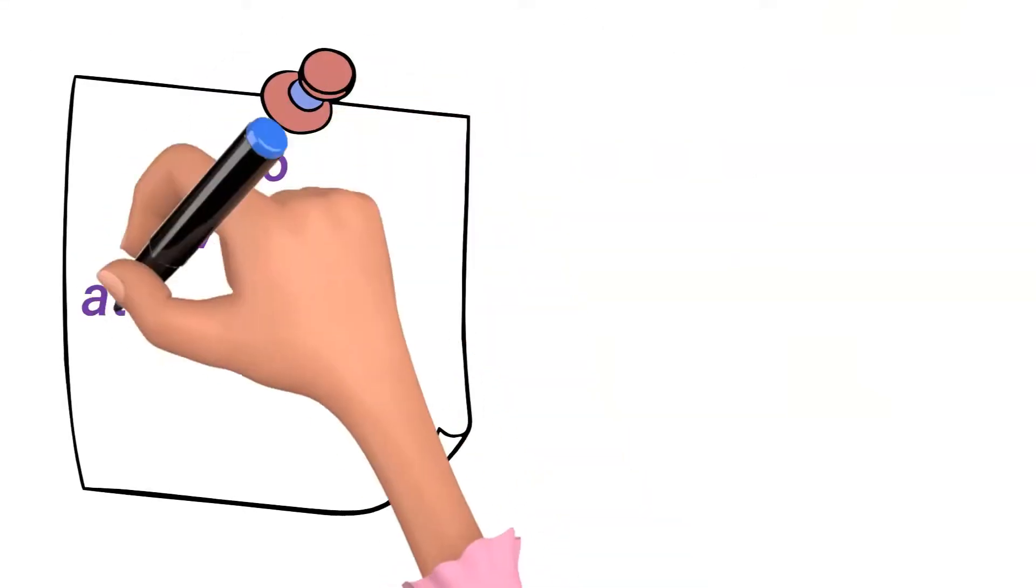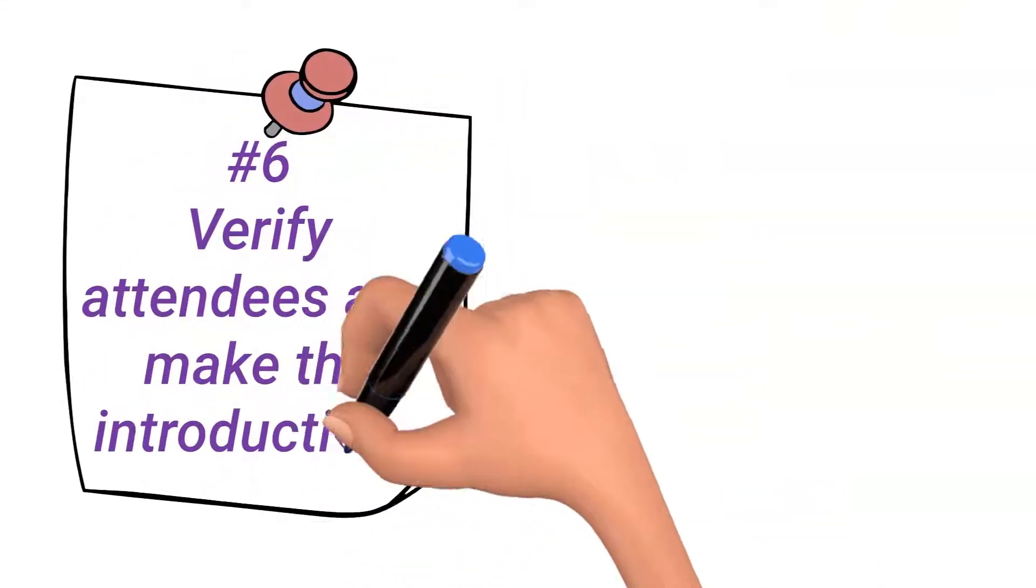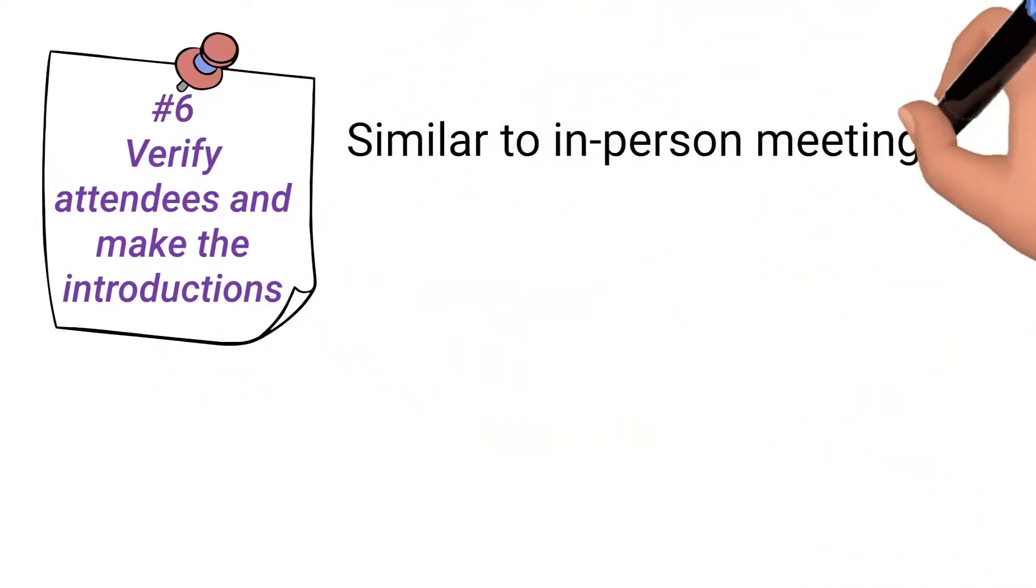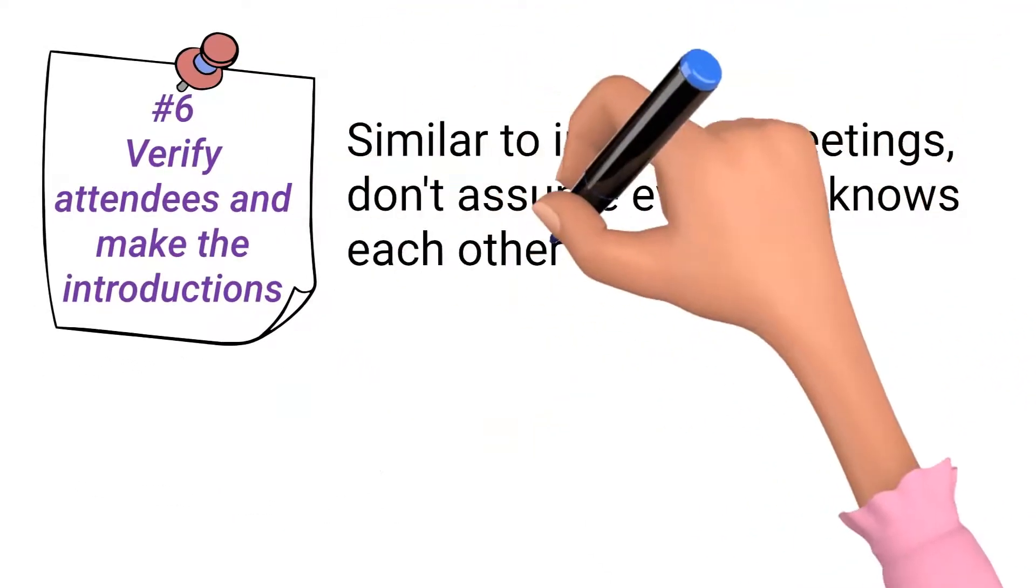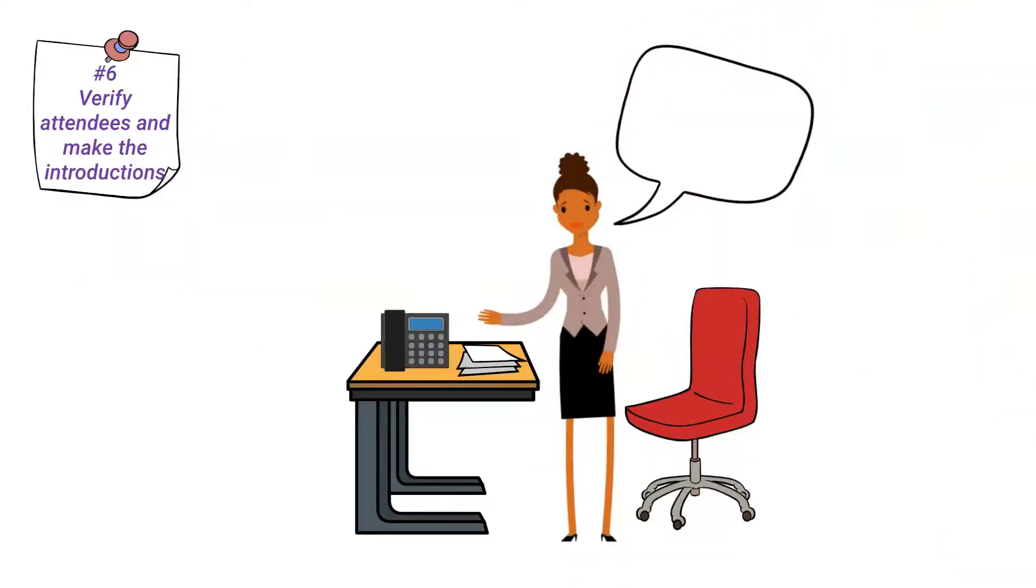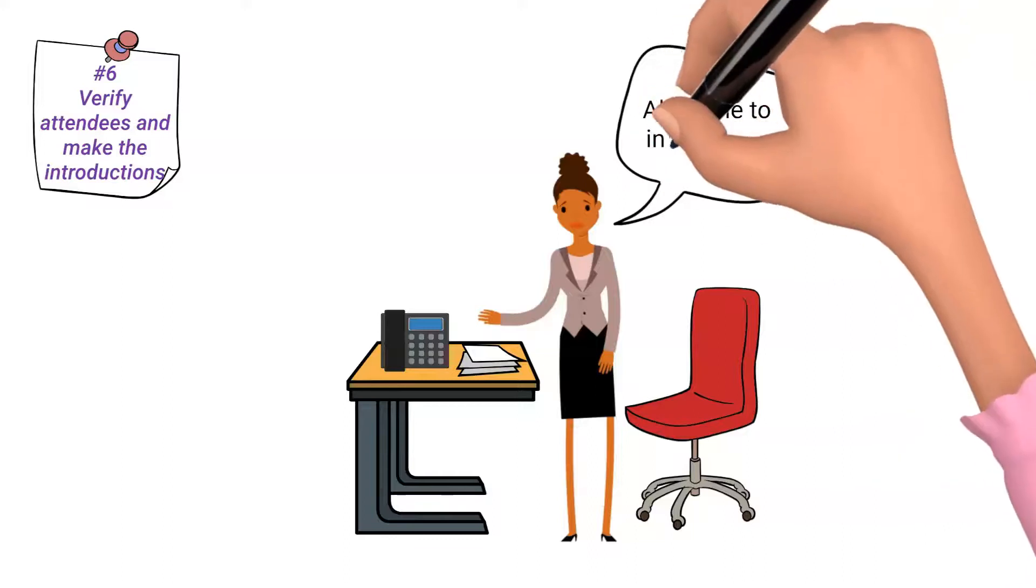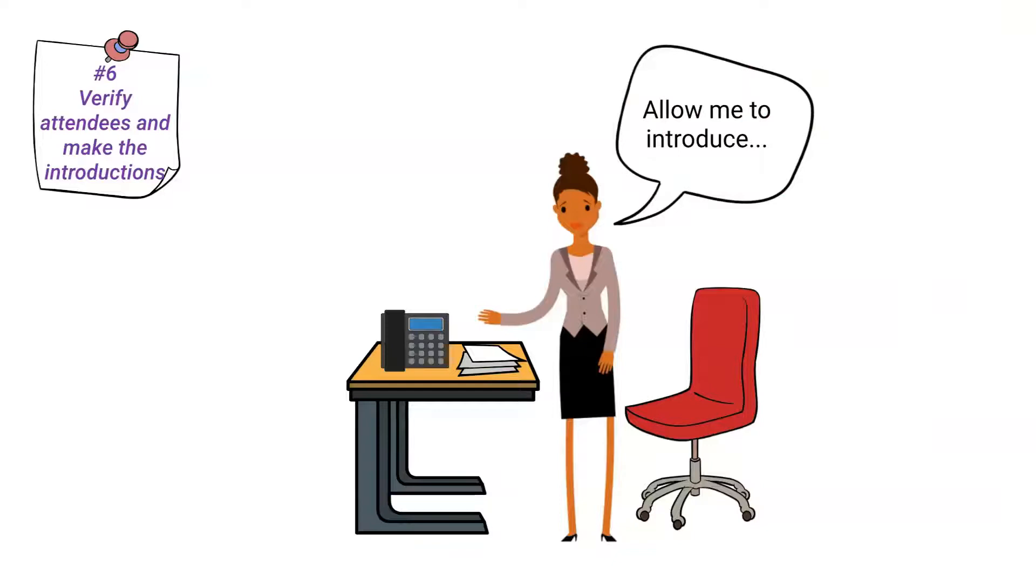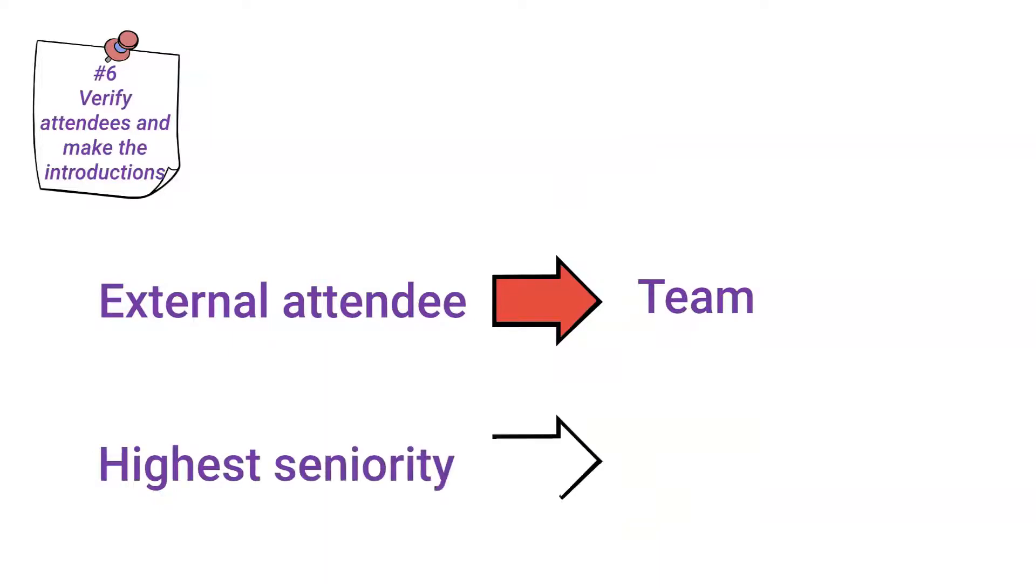Number 6. Verify the attendees on the call and make the required introductions. Similar to in-person meetings, don't assume everyone knows each other. This is an essential conference call meeting etiquette rule, especially when the meeting is the first in the project, or there are participants external to the company. The proper etiquette for introductions is, external attendee to the team, and highest seniority first, regardless of gender.